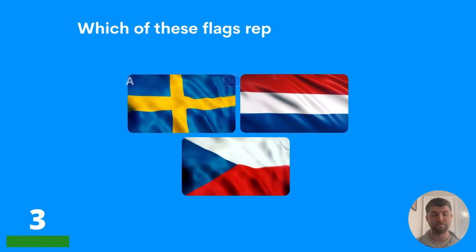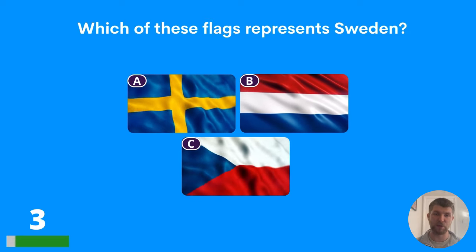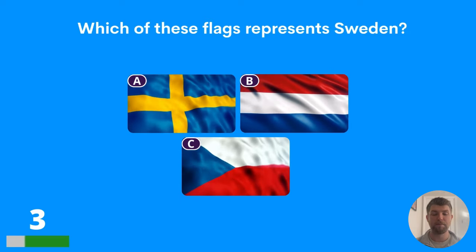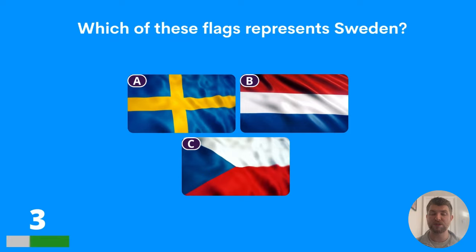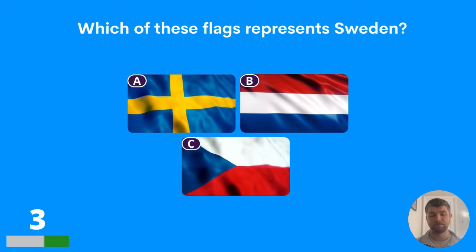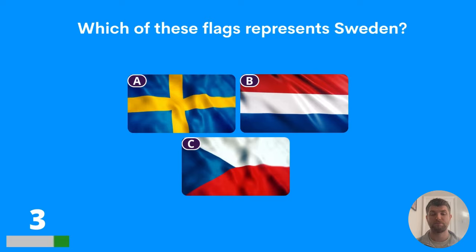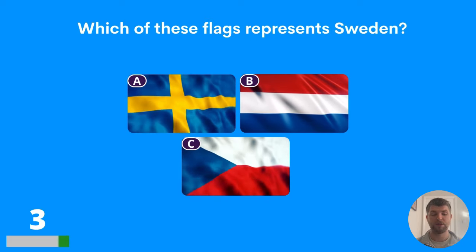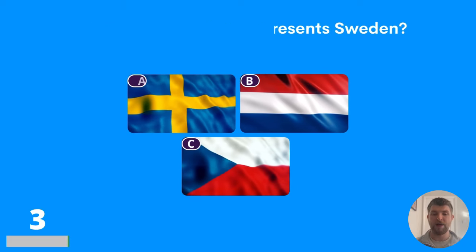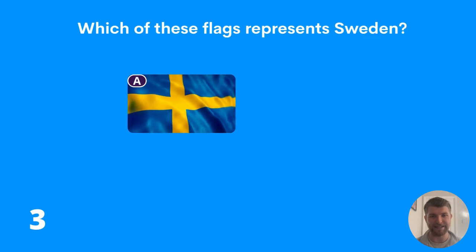Question three: which of these flags represents Sweden? Is it A, B, or C? The iconic blue and yellow — it's A.